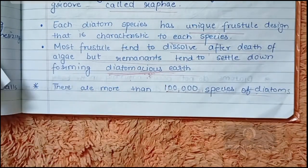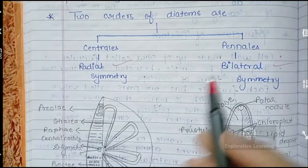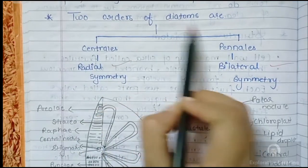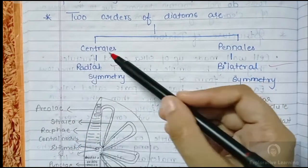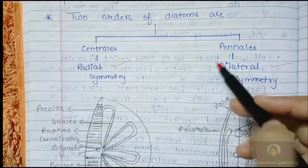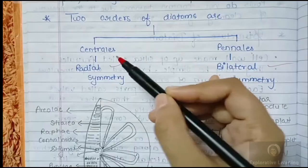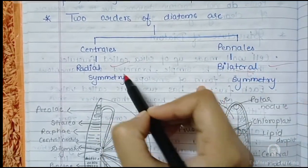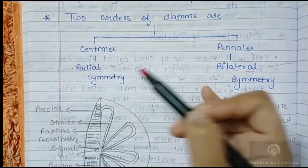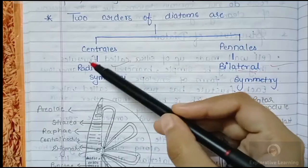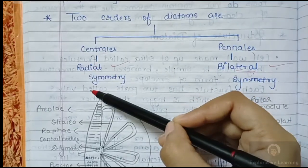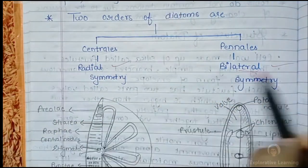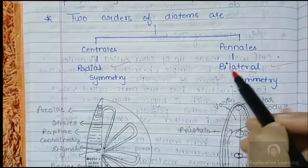There are more than 100,000 species of diatoms known so far. There are two common orders of diatoms: Centrales and Pennales. Pennales show bilateral symmetry whereas Centrales show radial symmetry.